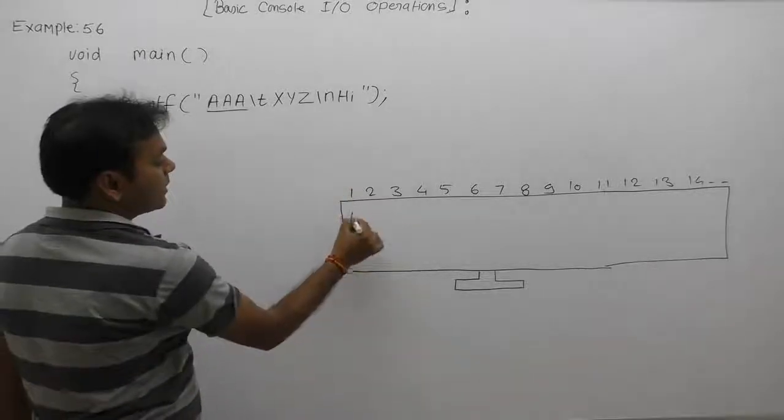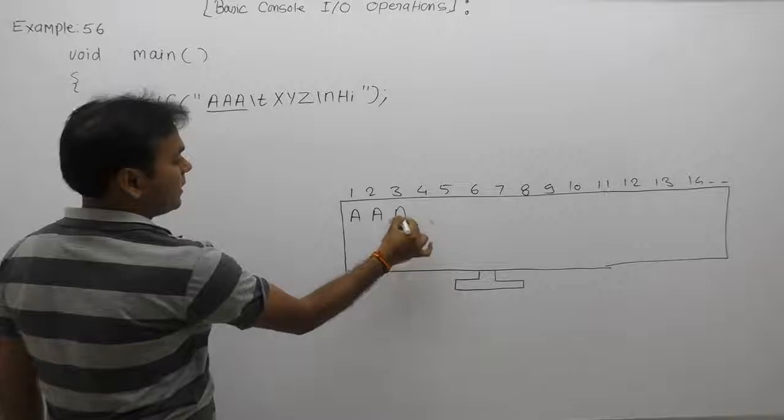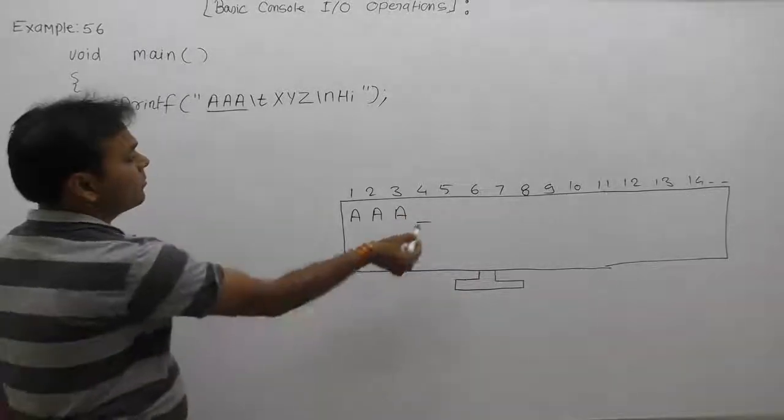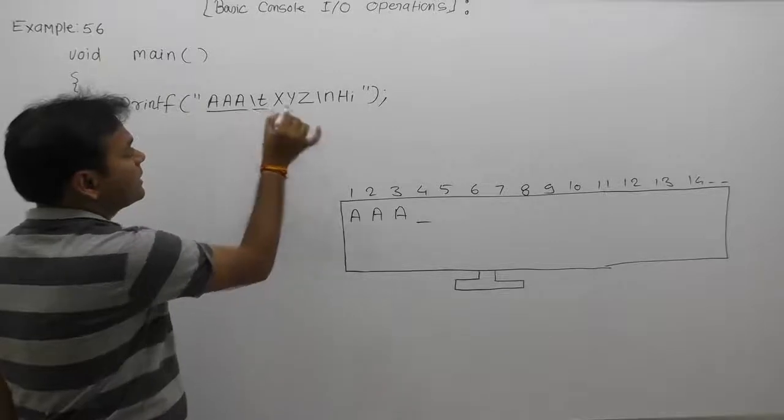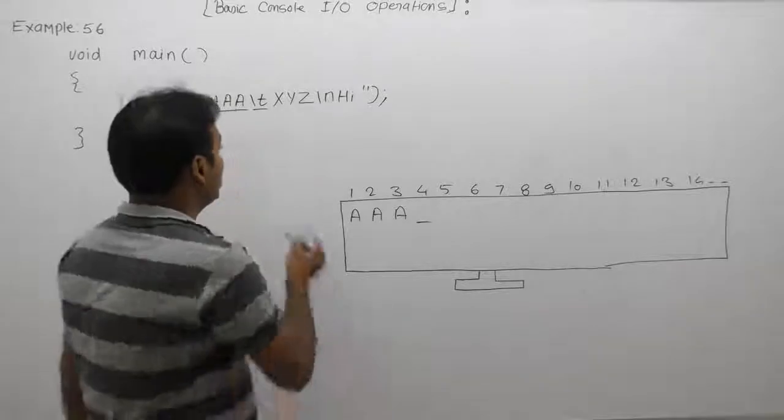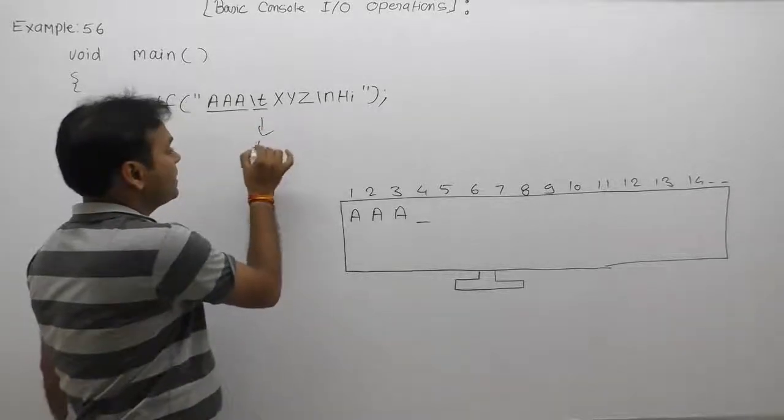A, again A, again A. After that, finally the cursor will be available at the position for the next one. \t - according to \t, the cursor will be moving after the eighth position. As we know, \t represents tab space.